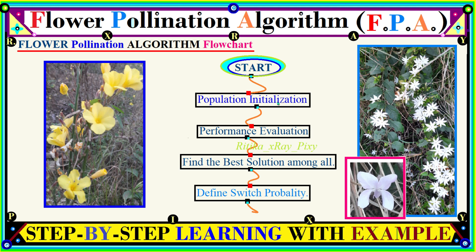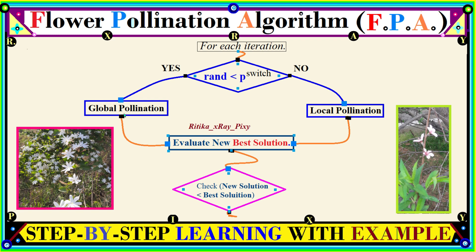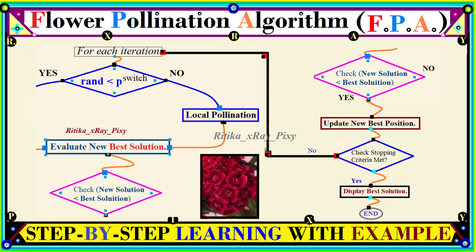The flowchart of this algorithm: first, start with the initial population randomly distributed in the search space. Then using a cost function, evaluate the performance of each agent and find the best among all. Define the switch probability to determine whether to perform global search (biotic/cross-pollination) or local search (abiotic/self-pollination). After that, modify the solution, evaluate performance, and check whether the new solutions are better than the older ones. If yes, update the solution positions. Then check the stopping criteria — if matched, display the best solution found; otherwise repeat the loop.